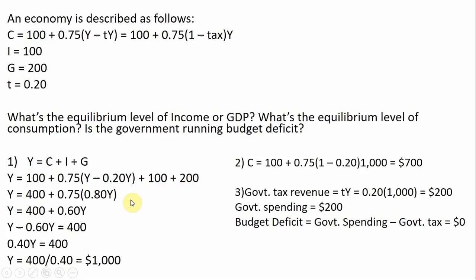Simplifying a little bit: 100 plus 100 plus 200 gives us 400. 0.75 is going to be multiplied by what's in parentheses, and that's just 0.8Y — that is, 1Y minus 0.2Y. Taking this a step further, 0.75 times 0.8 is 0.6.